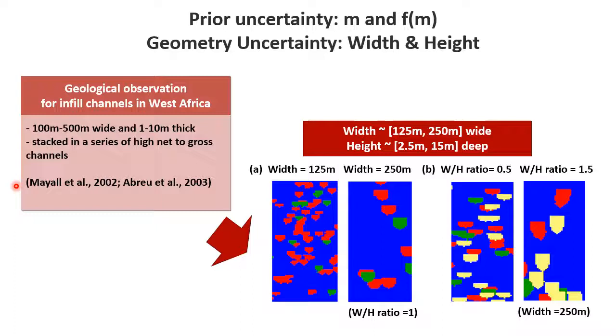Then there comes geometric uncertainty. We have to have channels that are going to have a certain width and height. And those are typically related. So there's a width and a height ratio. From that, we can generate many kind of geological models that have those variations in them.